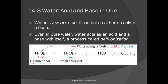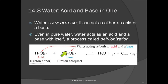Two water molecules can get together, and one can donate its hydrogen ion — it gives the hydrogen ion to the proton acceptor, the base. And then we end up with a hydronium ion and a hydroxide ion.